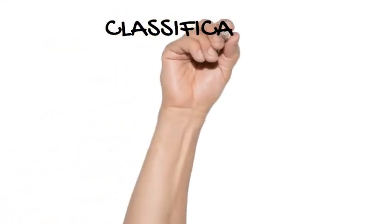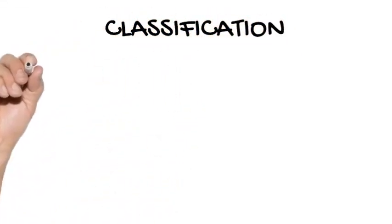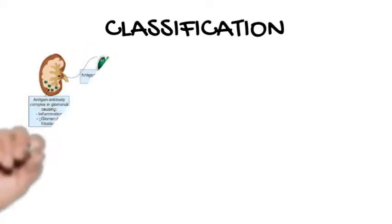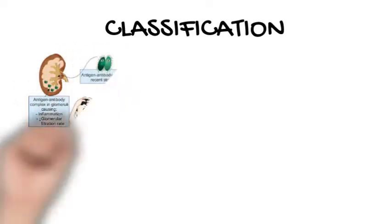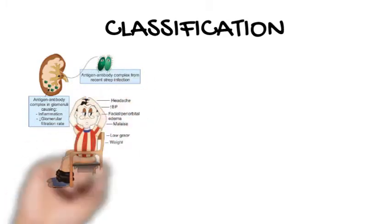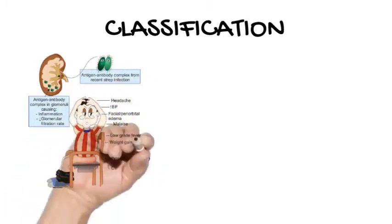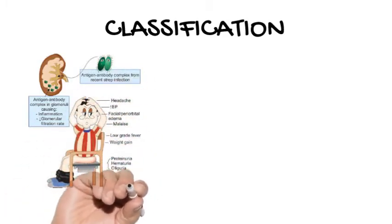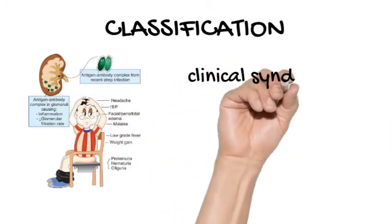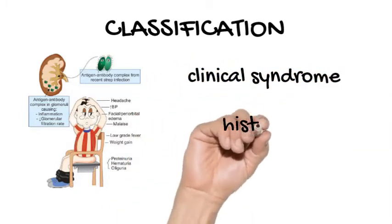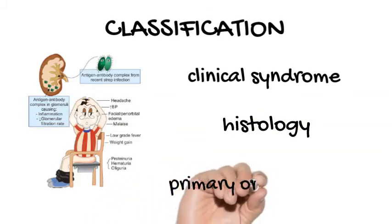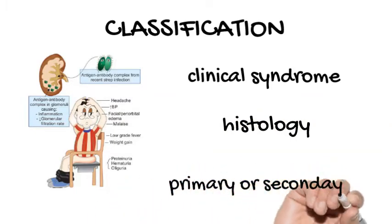Classification. There are three ways to classify glomerular diseases. Glomerulonephritis can be classified according to the clinical presentation, or by histology. It can also be classified as primary or secondary types. In the former, the pathology is limited to the kidney, whereas in the latter, a systemic condition is associated with renal involvement.